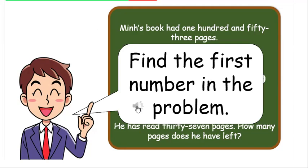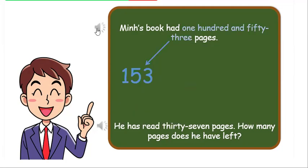Find the first number in the problem. Mun's book had 153 pages. He has read 37 pages. How many pages does he have left?